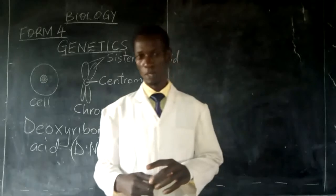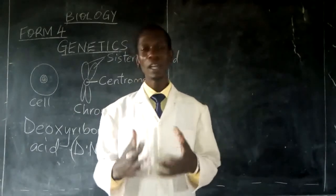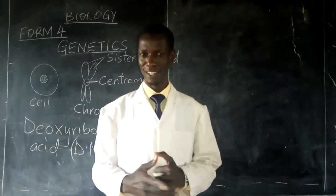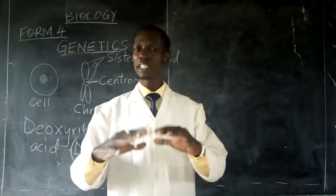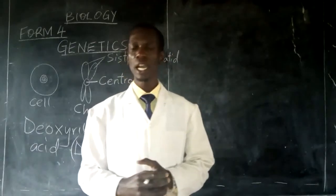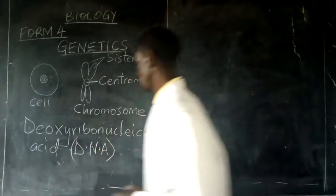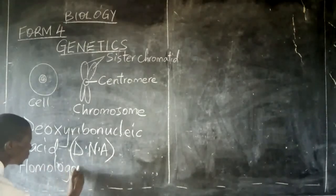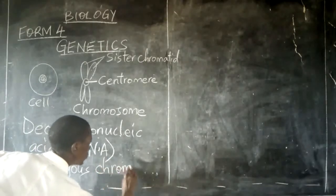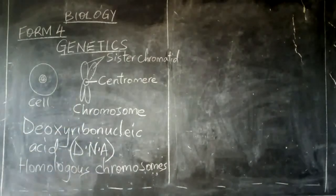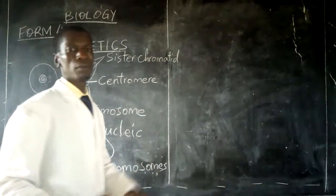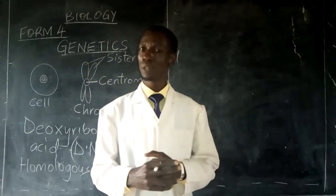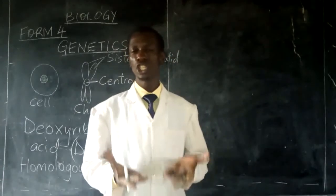These chromosomes may have different structures and different genetic materials, and they always appear in pairs. Chromosomes which have the same size, shape, and structure are referred to as homologous chromosomes. As much as they may have the same size, shape, and structure, they may have different genetic contents.